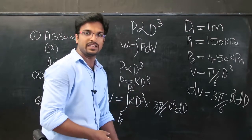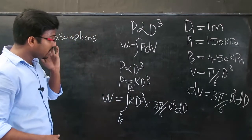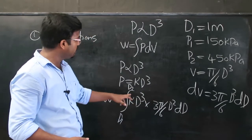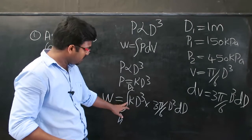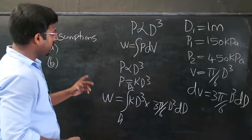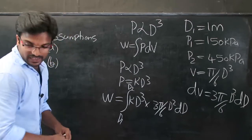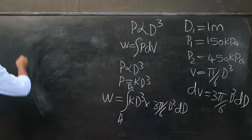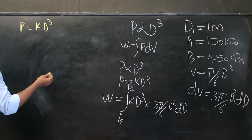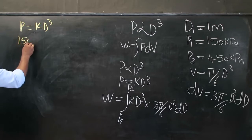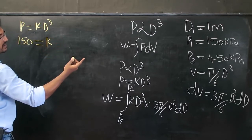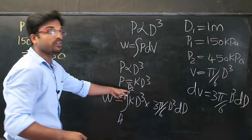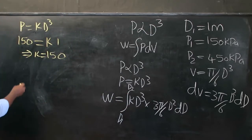We integrate with respect to diameter, so we need D1, D2, and K. D1 is already known as 1 meter. To find K, we use the initial conditions: P = K·D³ gives 150 = K·(1)³, so K = 150.